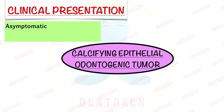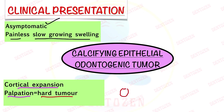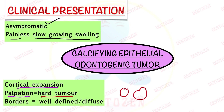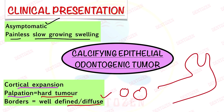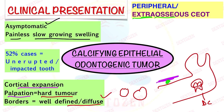Clinically, it presents as an asymptomatic, painless, slowly growing swelling which can cause cortical expansion. On palpation, it can present as a hard tumor with well-defined or diffuse borders. 52% of cases are seen in association with unerupted or impacted teeth, so it can resemble a dentigerous cyst. We can also see peripheral CEOT present in the gingiva and soft tissues, also known as extraosseous outside the bone.